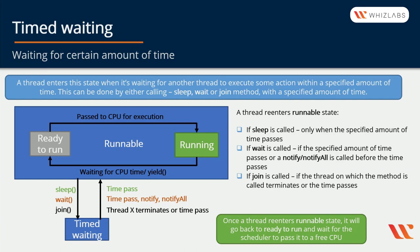A thread enters the Timed Waiting state when it's waiting for another thread to execute some action within a specified amount of time. This can be done by calling sleep, wait, or join method with a specified amount of time. Since there are three ways to enter Timed Waiting, a thread can re-enter Runnable state in different ways: if sleep is called, only when the specified amount of time passes; if wait is called, either when the specified time passes or when notify or notifyAll is called before the time passes; or if join is called, when the thread on which the method is called terminates or the time passes. Once a thread re-enters Runnable state, it will go back to Ready to Run and wait for the scheduler to pass it to a free CPU.